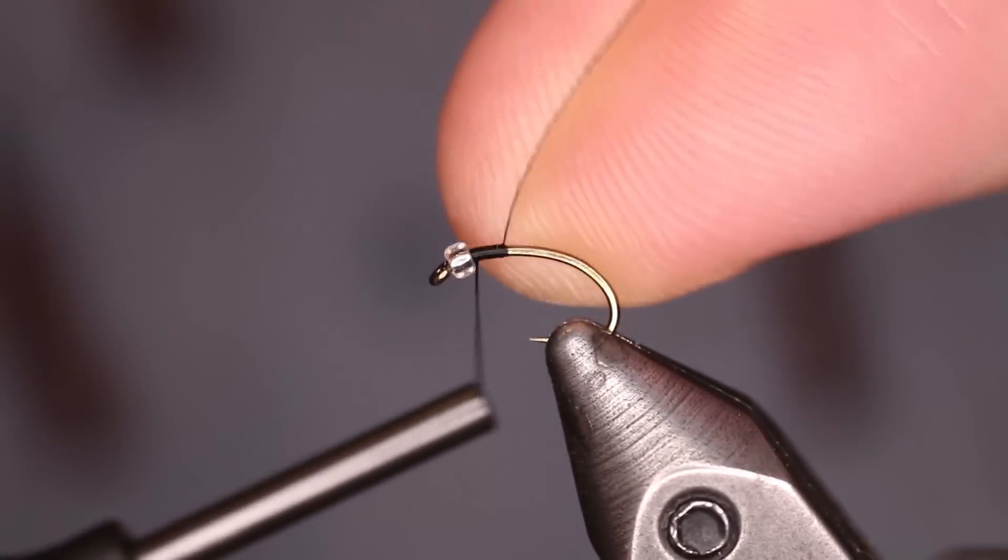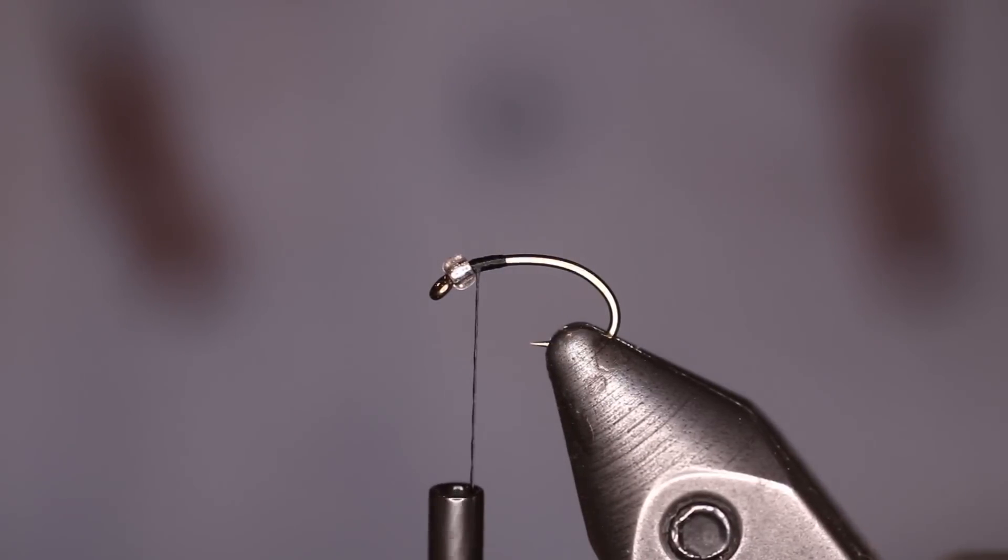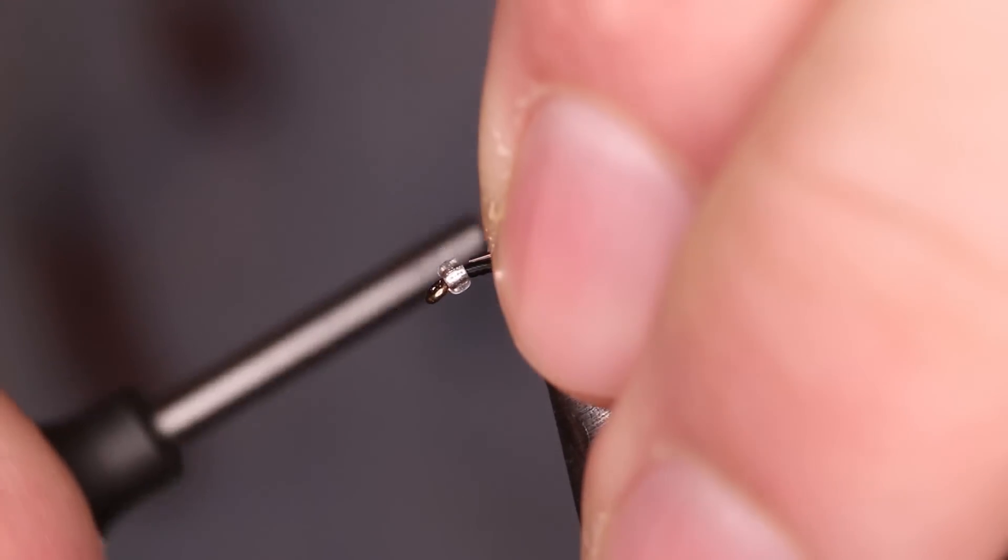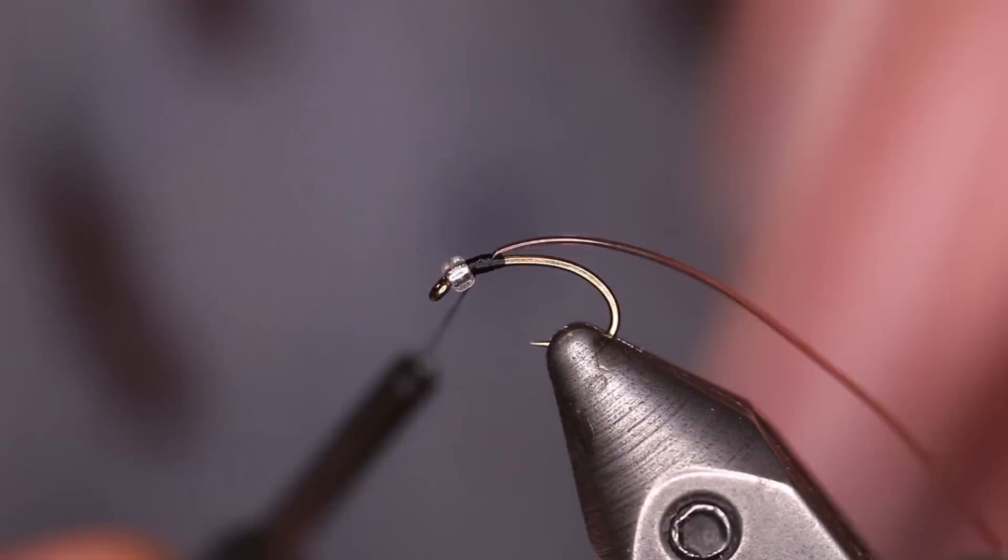Just going to create a little base layer of thread right behind the bead. Next, we're going to tie in our micro tubing, just capturing the tip behind the bead and wrapping it up towards the front here.